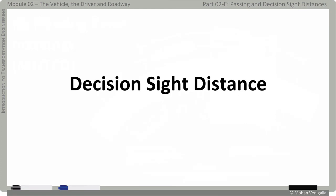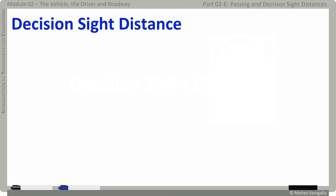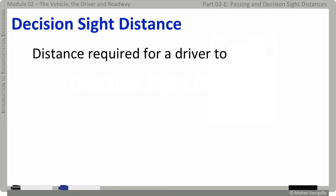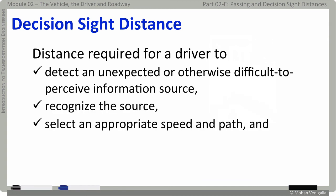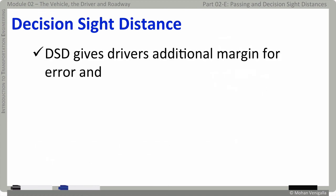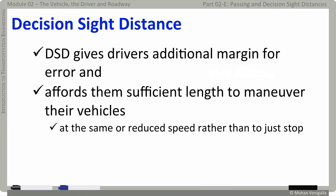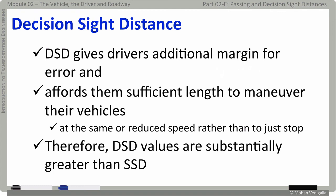Here is a detailed example of how the MUTCD specifies pavement markings for passing zones. Now, a quick note on decision sight distance. It is the distance required for a driver to detect an unexpected or otherwise difficult-to-perceive information source, recognize that source, select an appropriate speed and path, and initiate and complete the required maneuver safely and efficiently.